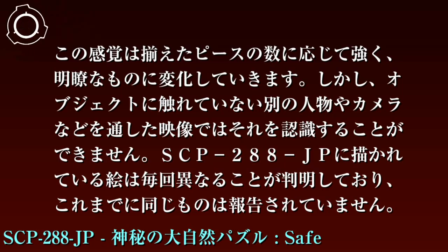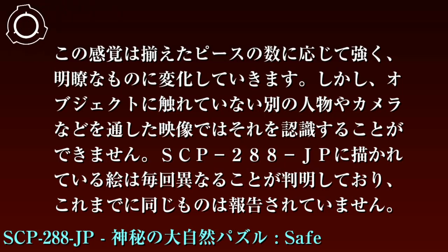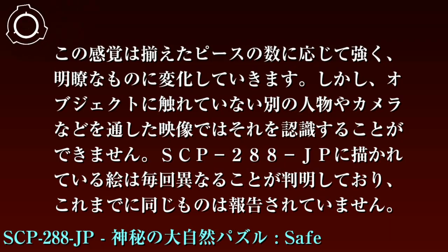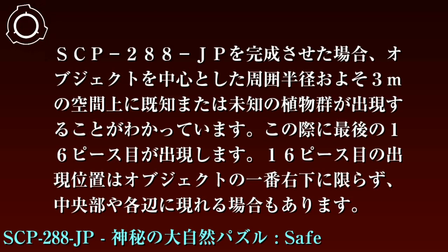SCP-288-JTはその表面上に一見何も描かれていないため、パズルとして完成させることが不可能に見えます。しかしパズルピースを動かし、1ピースでも正しい位置に移動させた人物には、オブジェクト上にうっすらと自然を模した風景画が描かれているように感じます。この感覚は揃えたピースの数に応じて強く明瞭なものに変化していきます。しかしオブジェクトに触れていない別の人物やカメラなどを通した映像ではそれを認識することができません。